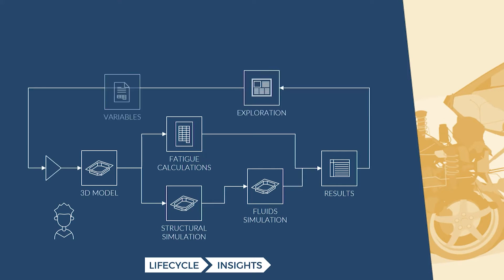This gets into automation and varying design inputs. There are all sorts of design variables that you can change and explore different options. What Mode Frontier does with simulation automation is that you can define those variables as things that can change. Then you can run designs of experiments, sensitivity studies, and optimizations, and you can see how the answers change and track all those different designs and how they performed.